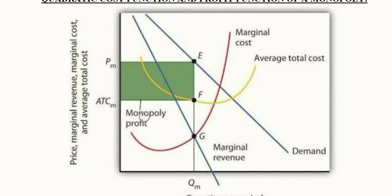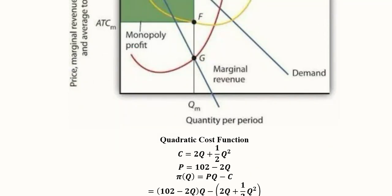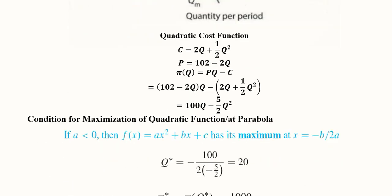Let's talk about the numerical. In the numerical we have a quadratic cost function. As you can see, a quadratic specification exists because the independent variable Q has a power of 2.